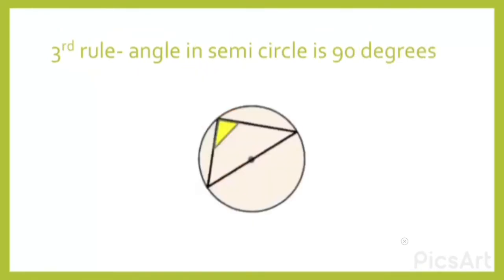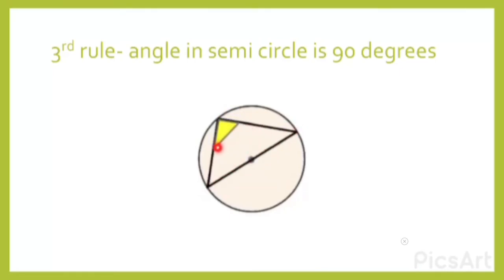The third rule is that the angle in a semicircle is 90 degrees. If you have a triangle inside a semicircle, the angle at the circumference within that semicircle will always be 90 degrees.